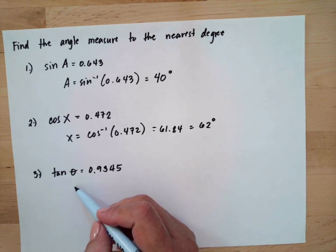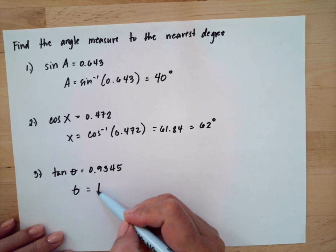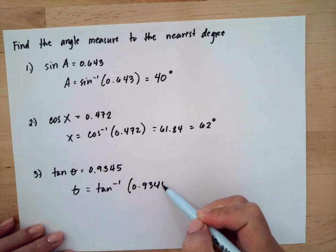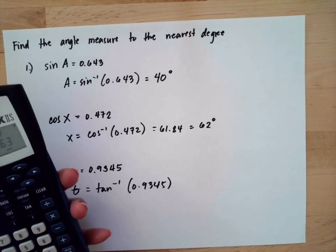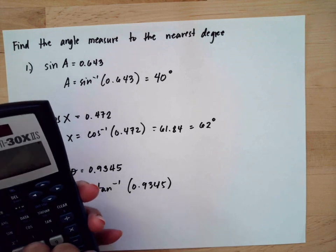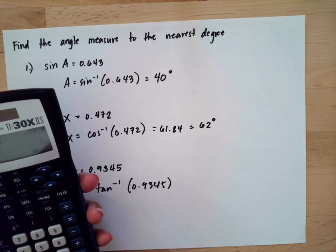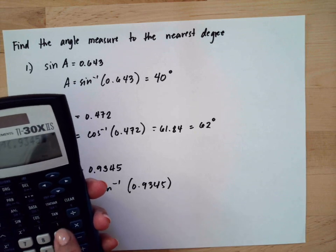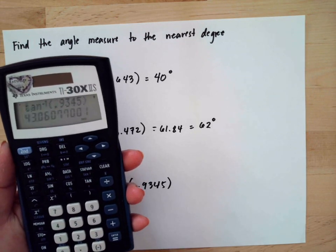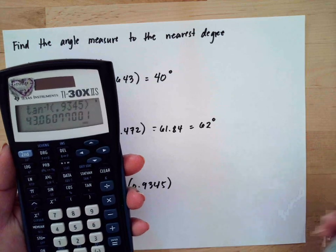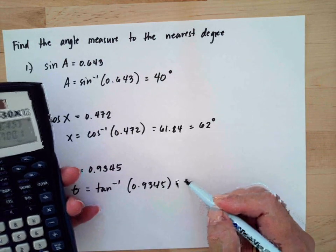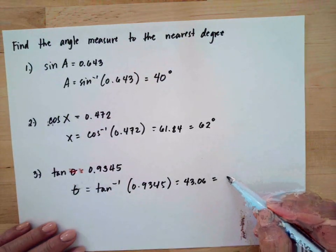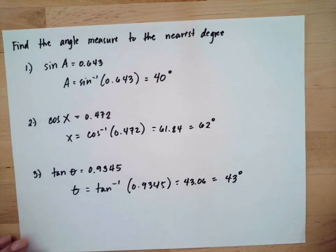For the last angle, do the inverse using the calculator — inverse of tangent. Punch in the numbers and press equal. You get 43.06, and rounded to the nearest degree, the answer is 43 degrees.